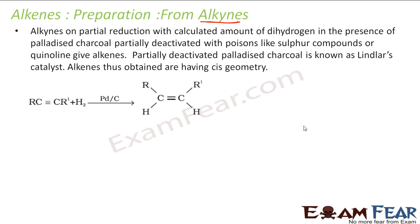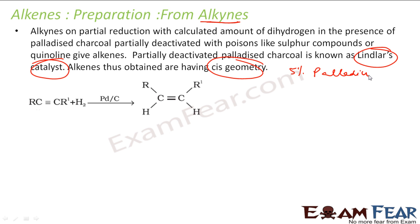One option is to use Lindlar catalyst. The alkene obtained using this has cis geometry. So what is the Lindlar catalyst? It is 5% palladium by weight. It has the great property that only the triple bond breaks — the triple bond converts to a double bond, but the double bond will not be converted to a single bond using Lindlar catalyst. This converts only triple to double bond. This catalyst is prepared by reduction of palladium chloride. It has a large surface area, has syn-addition, so you get cis-geometrical alkenes.